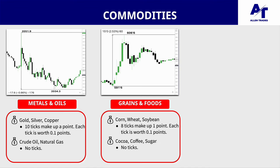The second commodity category is grains and foods. Grains include corn, wheat, and soybean — 8 ticks make up one point and each tick is worth 0.1 points. For foods — cocoa, coffee, and sugar — similar to oils, they don't move in ticks, only in points.